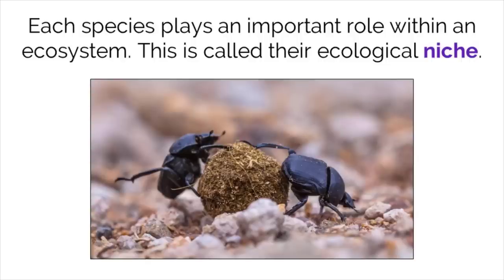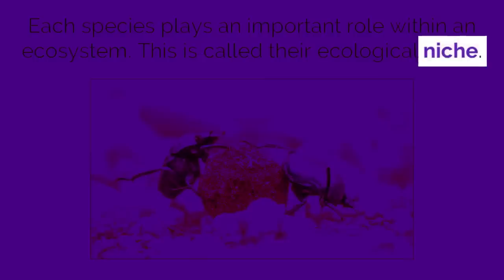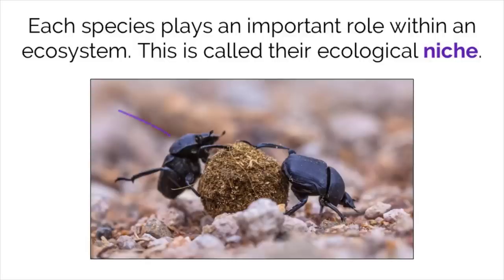Every species, like this dung beetle here, plays a specific role in its ecosystem. This is called their ecological niche. The beetles depicted here play the role of detritivores within this ecosystem by feeding upon dead organic matter. This recycles the nutrients back into the system to be used again within the beetle.